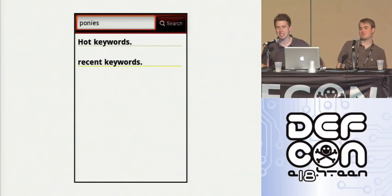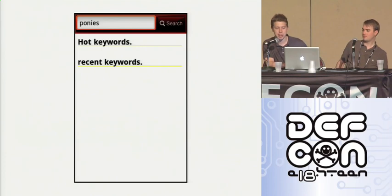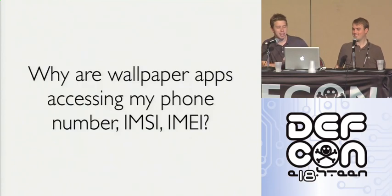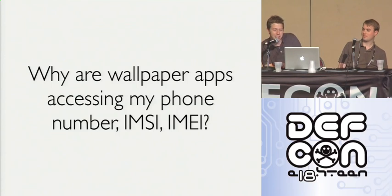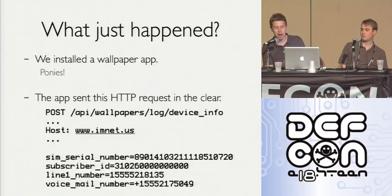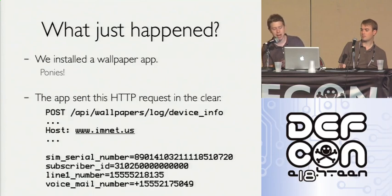Let's download one of these applications. We search for a wallpaper, select it — phone is pimped. But why are these wallpaper applications accessing my phone number, IMSI and IMEI? Using Wireshark, after installing the wallpaper app, we saw an HTTP request being sent in the clear to a server containing: my SIM serial number, my subscriber ID, my phone number, and my voicemail number — all in the clear.